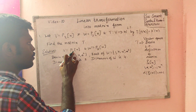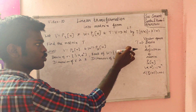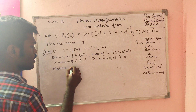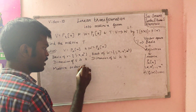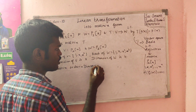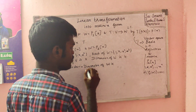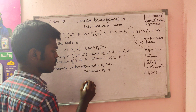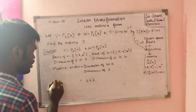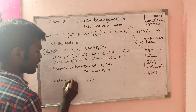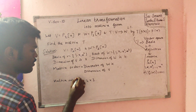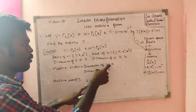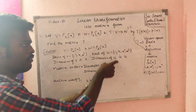Matrix order equals dimension of W by dimension of V. Dimension of W is 4 and dimension of V is 3, so the matrix order is 4 by 3. This is the formula: codomain dimension by domain dimension.